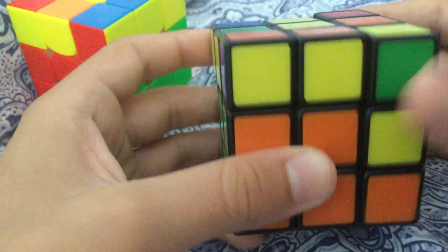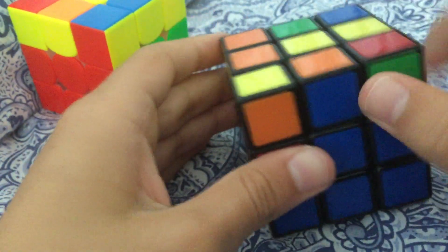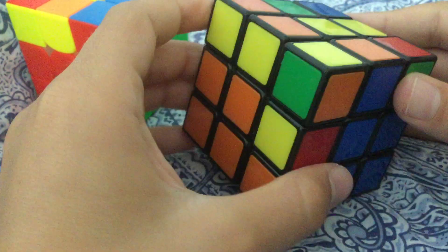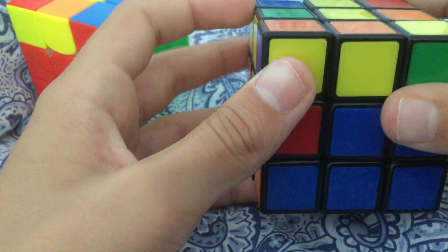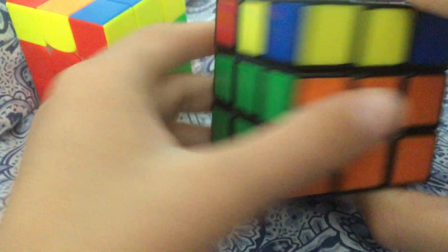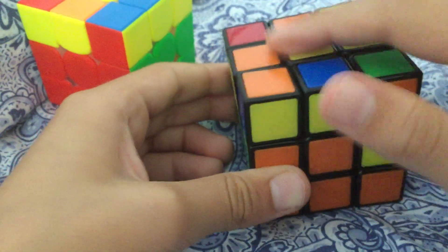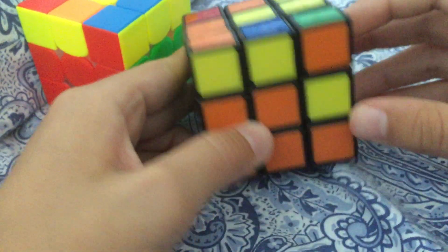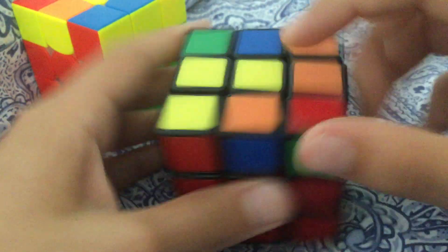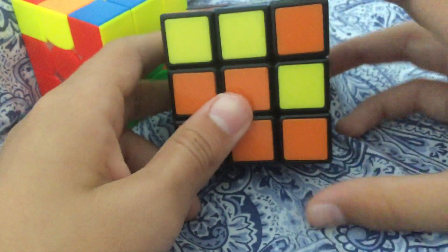And then match it with the center, turn it away from the orange, L prime U prime L, right here or L prime. So if the cube is like this and you can't find any colors around and it's just yellows, you're going to look to this, you're going to see this.